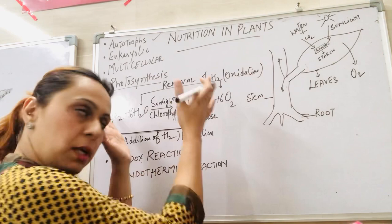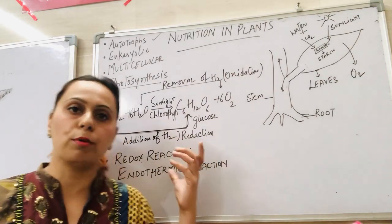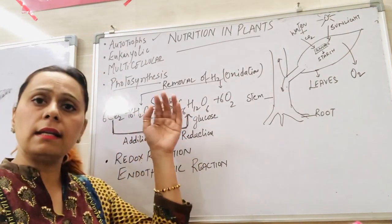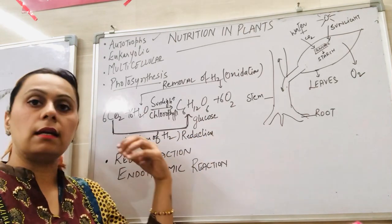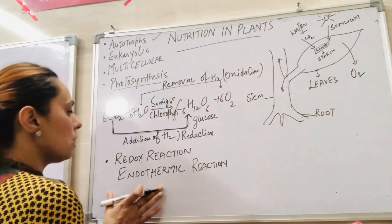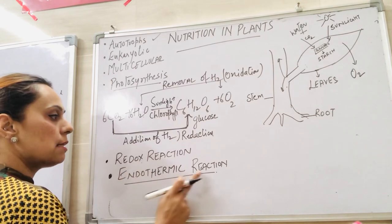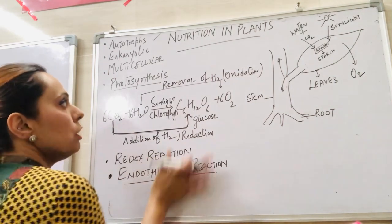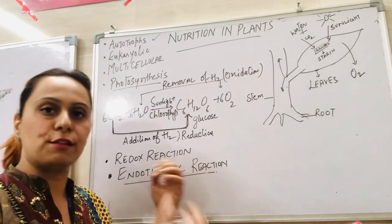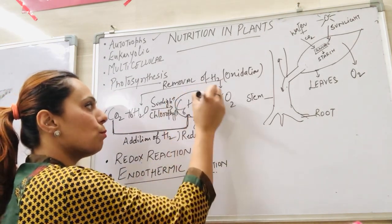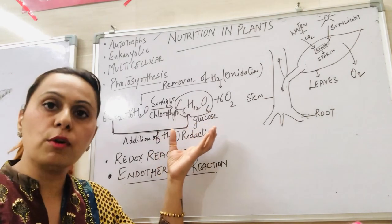So this is a redox reaction. When the sunlight is involved, without the help of sunlight we are not able to perform this reaction. So sunlight is a kind of energy that is getting into the reaction. Any reaction in which the energy is consumed, or we give heat to perform the reaction, is called endothermic reaction. So photosynthesis is a redox reaction as well as endothermic reaction. This is the way in which plants make the food for themselves as well as for us. We consume this glucose or the complex molecule that is starch. In simple language we call it carbohydrates.